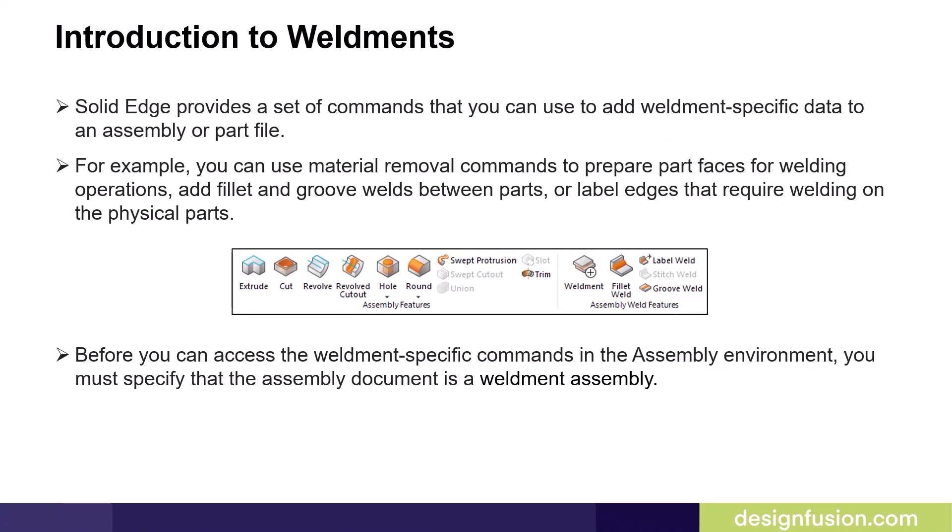Solid Edge provides a set of commands that you can use to add weldment-specific data to an assembly or part file. For example, you can use material removal commands to prepare part faces for welding operations, add fillet and groove welds between parts, or label edges that require welding on the physical parts. Before you can access the weldment-specific commands in the assembly environment, you must specify that the assembly document is a weldment assembly.